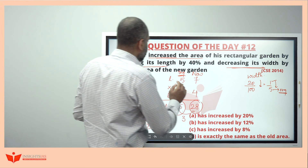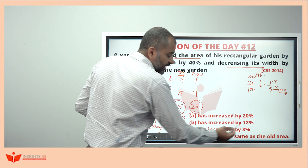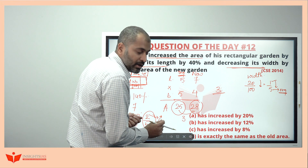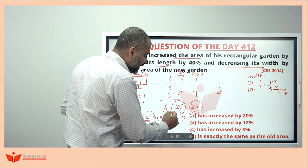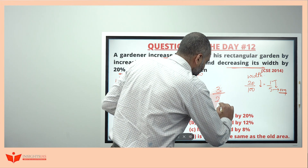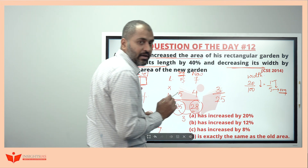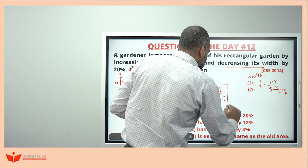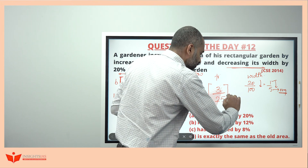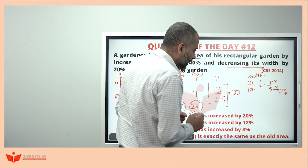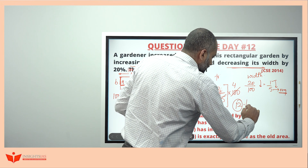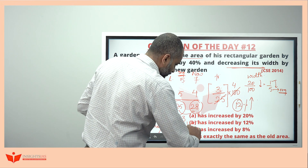He is asking the increase in terms of percentage. The increased part is 3. Compare it with the original area of 25. To convert the fraction 3 by 25 into percentage, multiply by 100: 3 by 25 times 100 equals 12%. So there is a 12% increase. Option B is your answer.